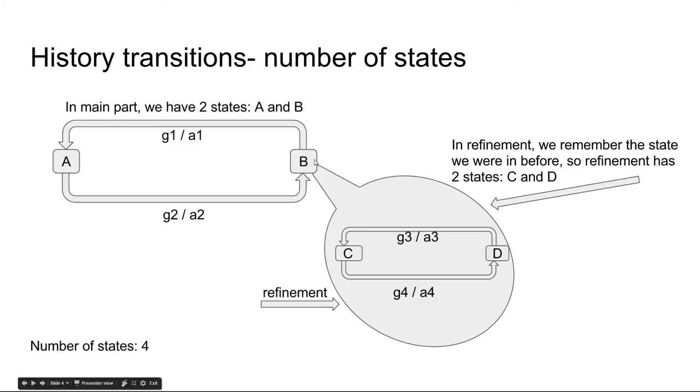For example, when I am at state D in the refinement and in a top-level machine wish to move from B to A like this.